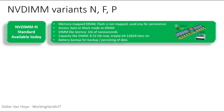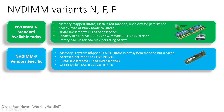NV-DIMM N is basically just DRAM mapped to the memory — flash is not mapped and is only used for persistence, with a battery pack for power loss protection. It's very fast with very low latency, but capacities are tied to DIMM capacity, so 8 to 32 gigabytes. NV-DIMM F devices are actually flash put on a memory stick — they go in a memory slot but have high latency and much higher capacity, though it's a niche, vendor-specific market.